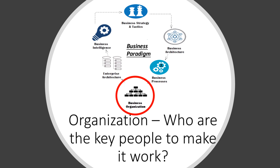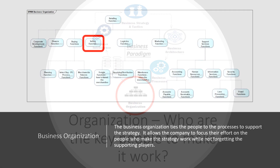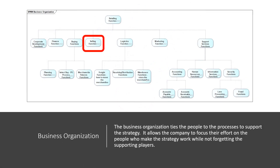The next IVROM area deals with the key people needed to support the processes to support the strategy. The business organization ties the people to the processes to support the strategy. It allows the company to focus their efforts on the people who make the strategy work while not forgetting the supporting players. In the BOPIS example, the focus is on those who do the selling.